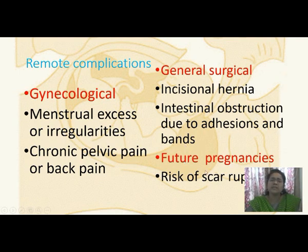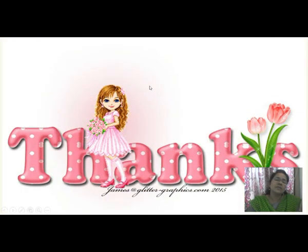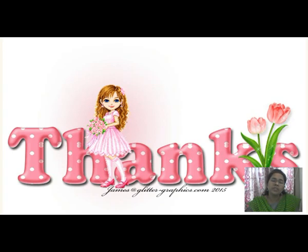Remote complications: gynaecological complications include menstrual excess or irregularities and chronic pelvic or back pain. General surgical complications include incisional hernia and intestinal obstruction due to adhesions and bands. Future pregnancy risks include scar rupture. Fetal complications include iatrogenic prematurity and respiratory distress syndrome. That concludes the topic of caesarean section, covering the definition, indications, elective and emergency types, lower and classical segments, preoperative and intraoperative preparation, steps of the operation, postoperative care, and complications.